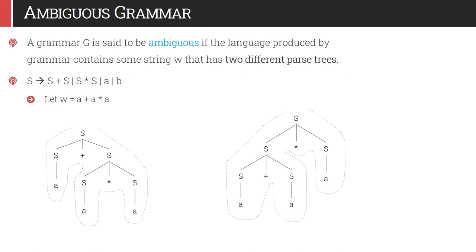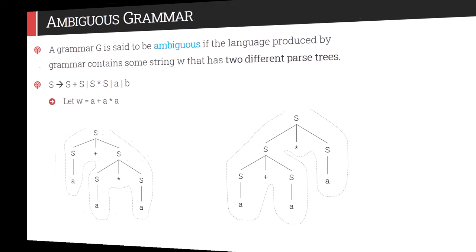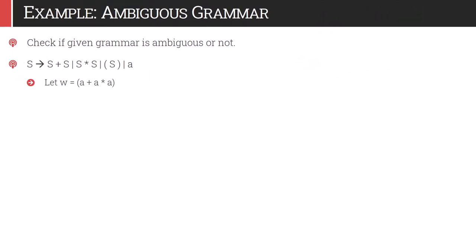Ambiguous grammar is a problem — they are responsible for backtracking. Many times we follow one path that may not be proper, so we need to follow another path, and that will increase the time of parsing the string.